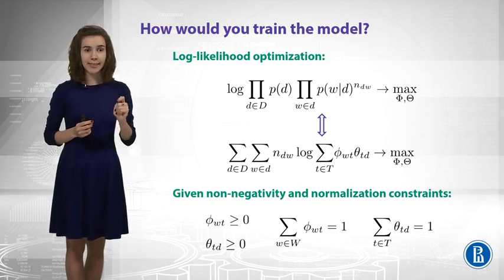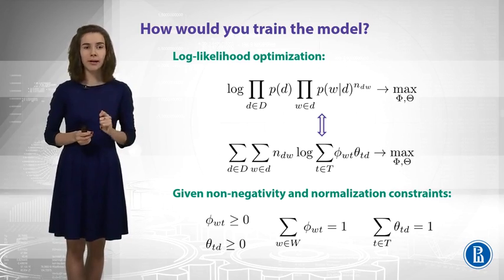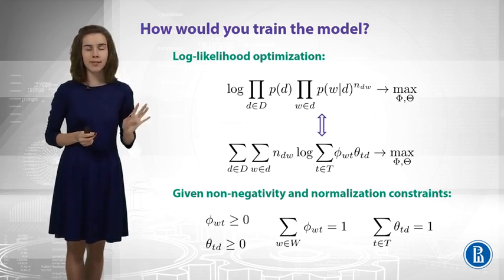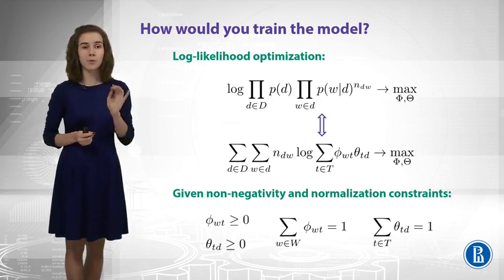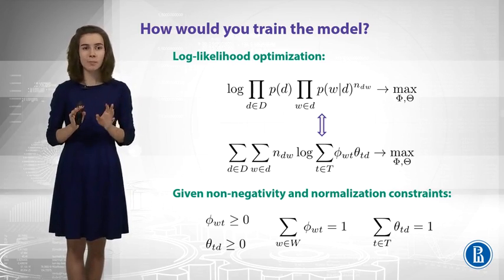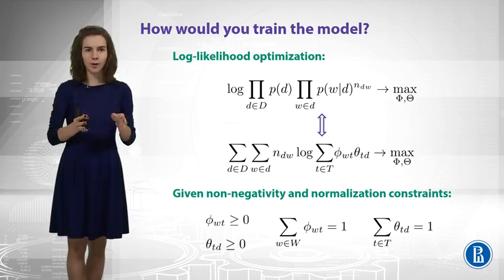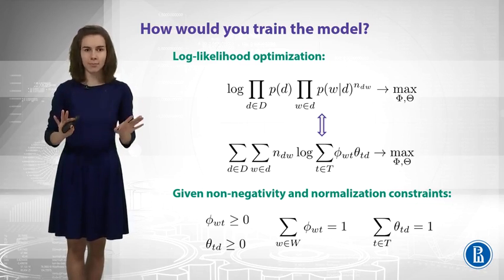Now, let us do some modification in this formula. First, let us apply a logarithm, and we will have the sum of logarithms instead of the logarithm of the product. Then, let us just get rid of the probability of the document, because the probability of the document does not depend on our parameters. We actually do not even know how to model these priors, so we just forget about them.